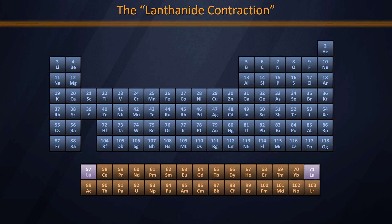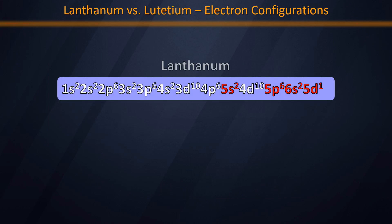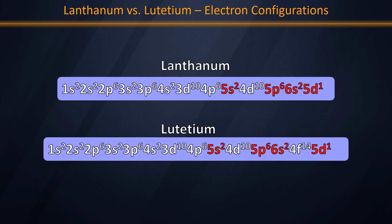So let's think about why and how that is. Let's start by considering the ground state electron configurations of lanthanum and lutetium — the extreme ends of the lanthanide series. Notice initially that each of these has exactly the same valence shell configuration: 6s2 on each.